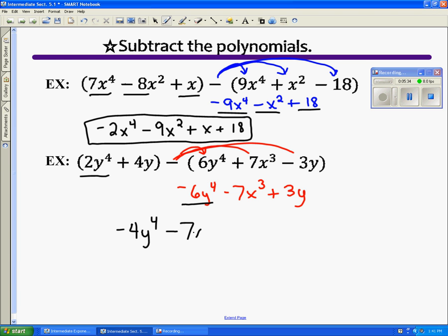Minus 7x³. That's the only x cubed term. Now I have a 3y and a 4y that I need to add together to get 7y. And that looks like all of them.